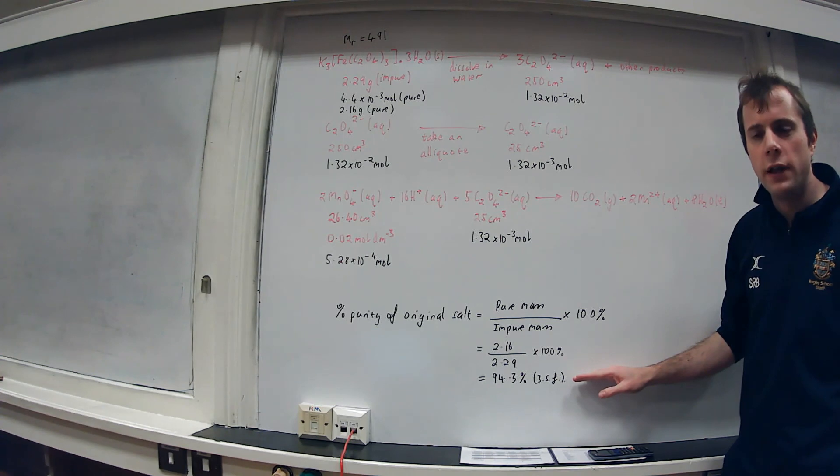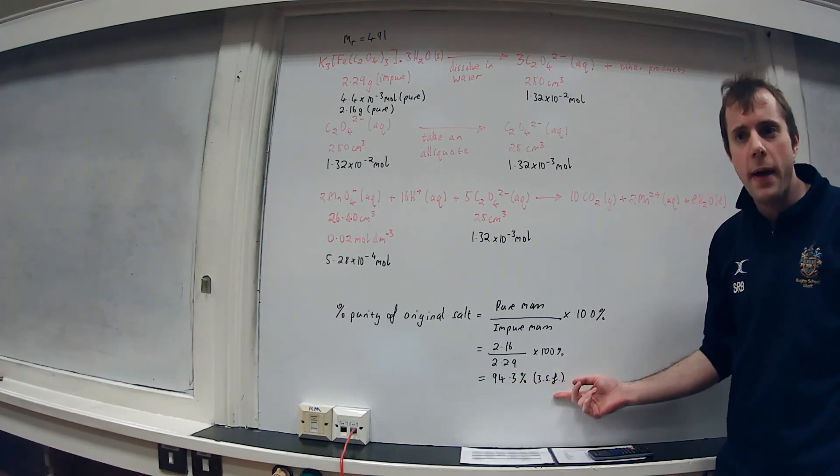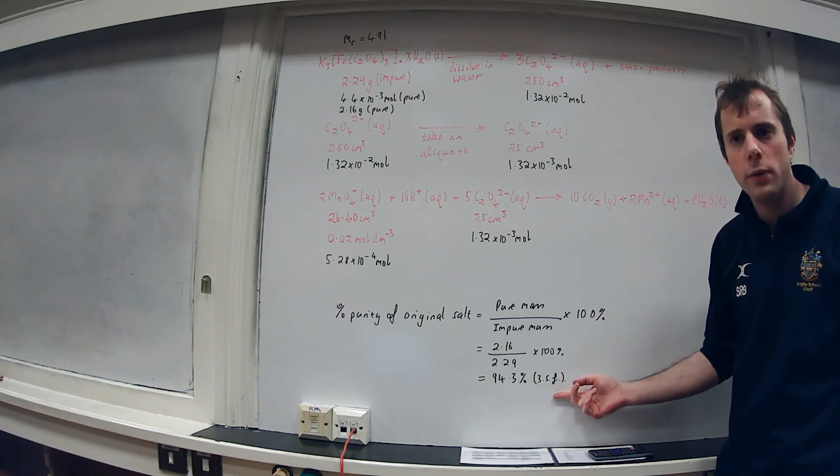You can check your final answer because we expect it to be a number less than 100. If you have a number more than 100 you've obviously made a mistake and you need to go back and double check your calculation.